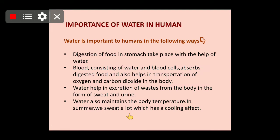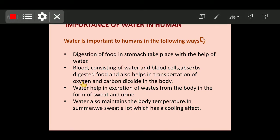Now we are proceeding with the importance of water for human beings. We need to drink 2 to 4 litres of water daily for our metabolic activities. The digestion of food in the stomach takes place with the help of water. Blood consists of water and blood cells — it absorbs digested food and helps in transportation of oxygen and carbon dioxide. As the major constituent of blood is water, it performs the function of transporting nutrition in our body.